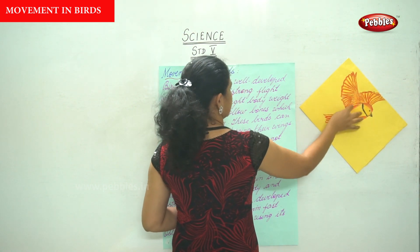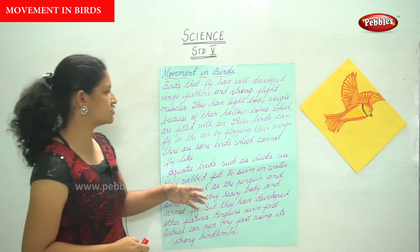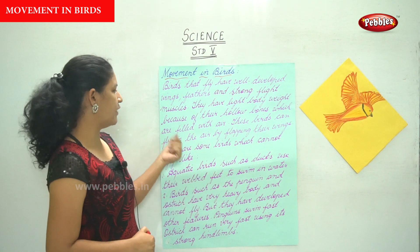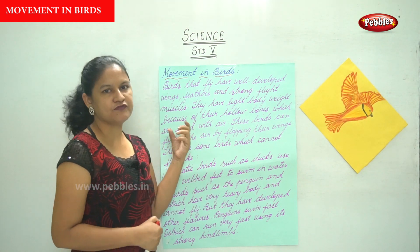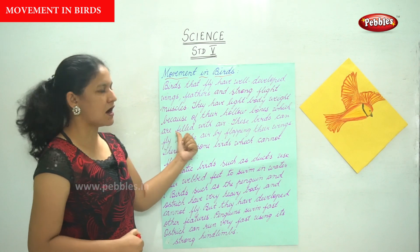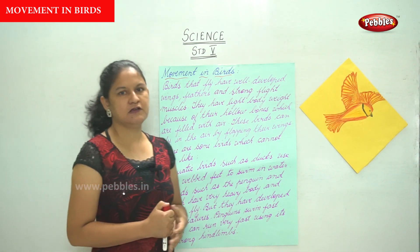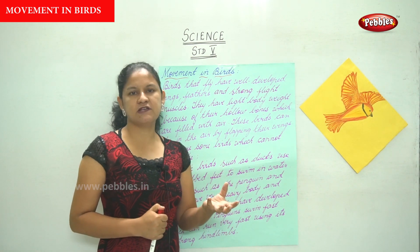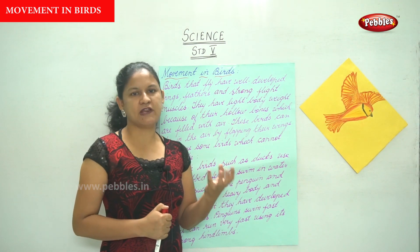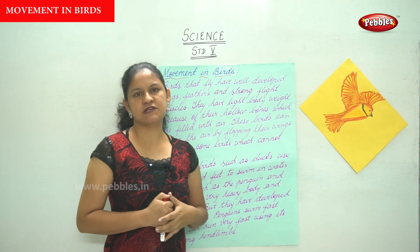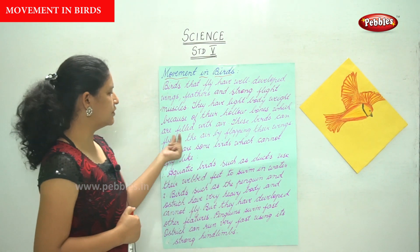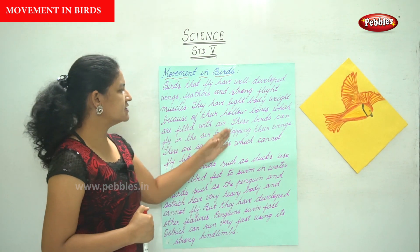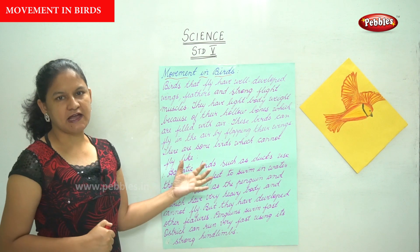Birds have light body weight because of their hollow bones, which are filled with air. If you take a bird, you will notice that the weight of the body is very light, and that is because of these hollow bones which are filled with air.